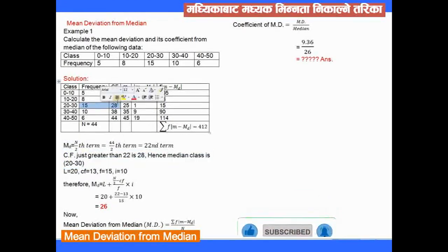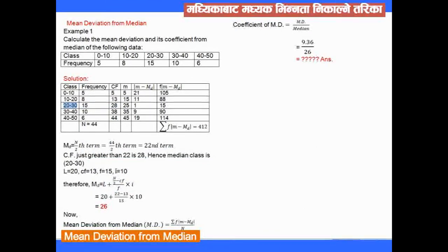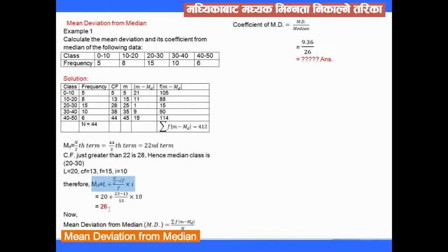The lower class limit (L) is 20, the CF before the median class is 13, the frequency (f) is 15, and the class interval (i) is 10. Applying the median formula: median = L + (n/2 - CF)/f × i, the median value comes out to 26.